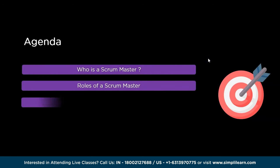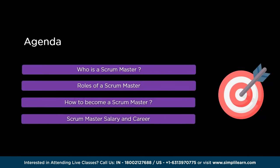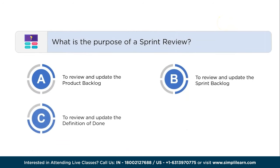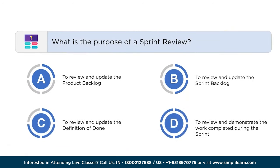We will cover topics such as who is a scrum master, roles of a scrum master, how to become a scrum master, and scrum master salary and career. Before we begin, here's a quick question: what is the purpose of a sprint review? Option A: review and update the product backlog. Option B: review and update the sprint backlog. Option C: review and update the definition of done. Option D: review and demonstrate the work completed during the sprint.